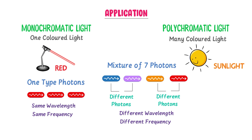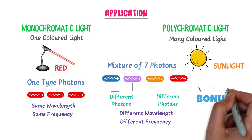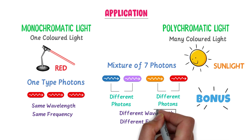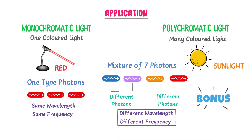Here is one last bonus tip: photons are different from one another due to differences in frequency and wavelength. So only these two parameters create different colors and different waves. I hope you have understood the concept of Planck's quantum theory.